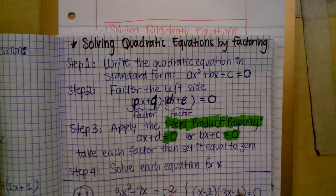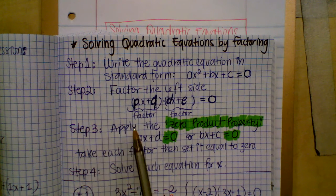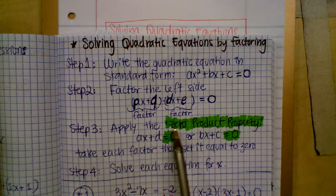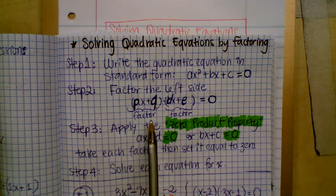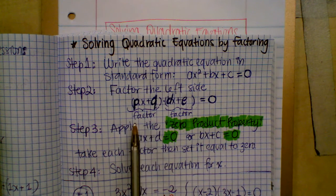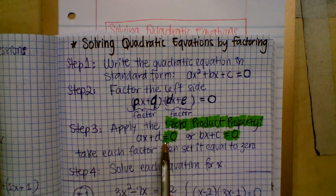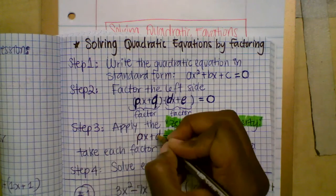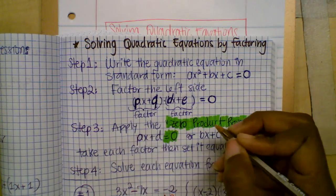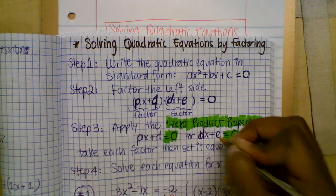Step two: factor the left side using the box method or by grouping. You want to rewrite this quadratic, going from standard form to factor form, and don't forget to write it equal to zero. It's not an expression anymore — the quadratic is an equation.